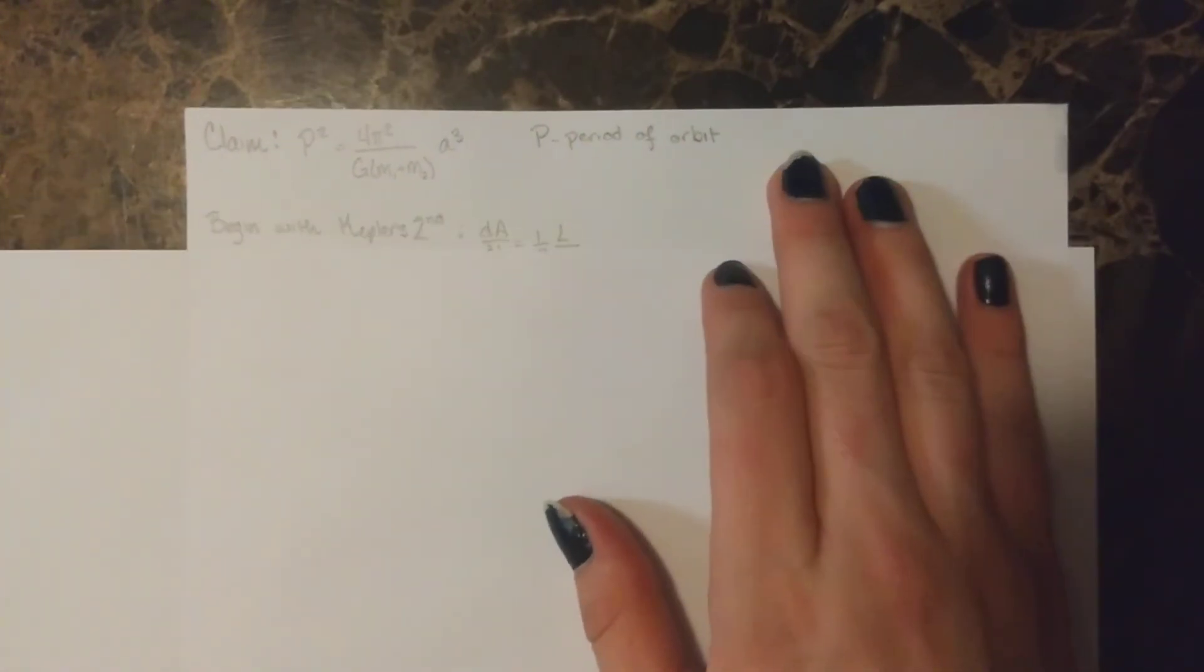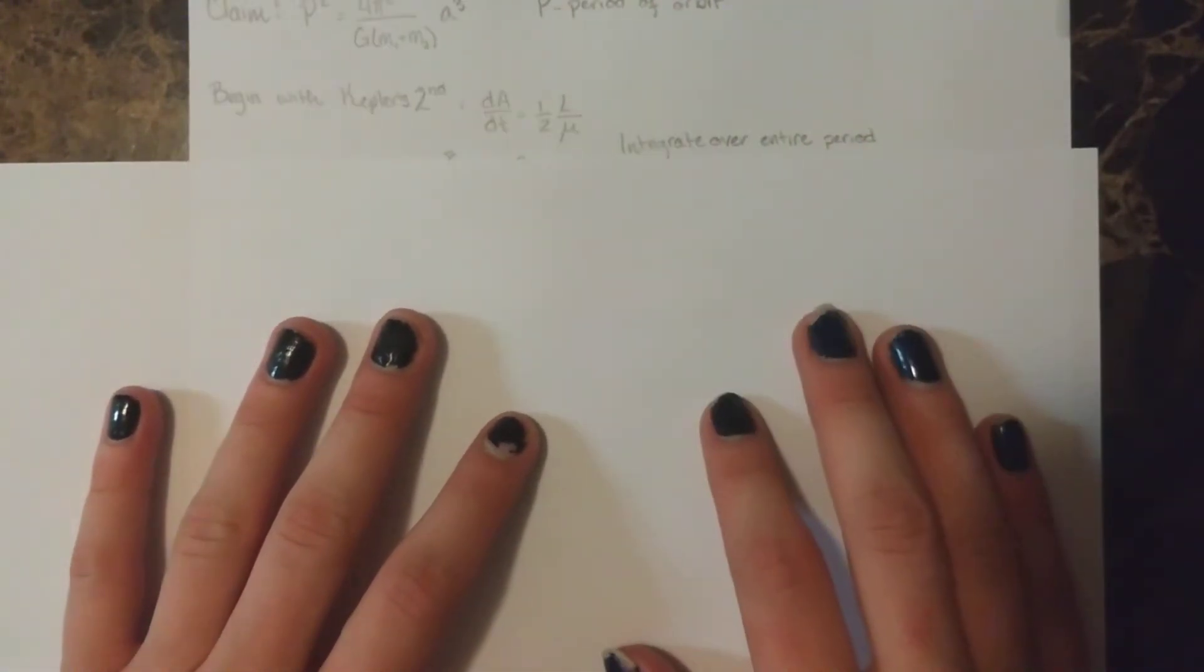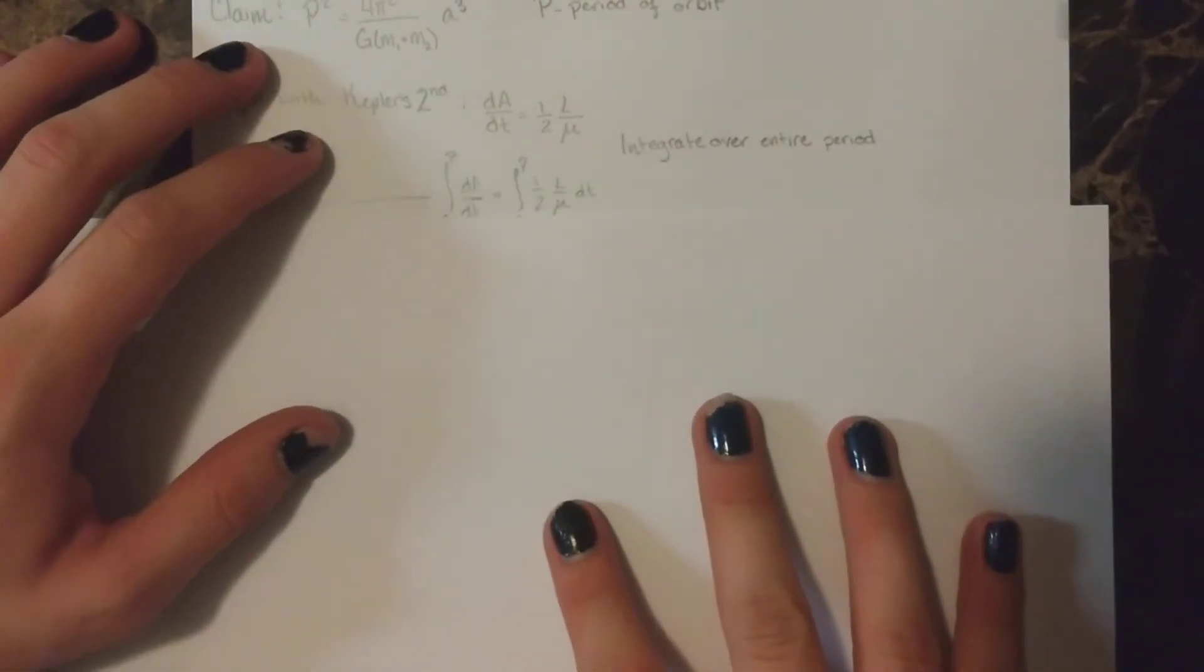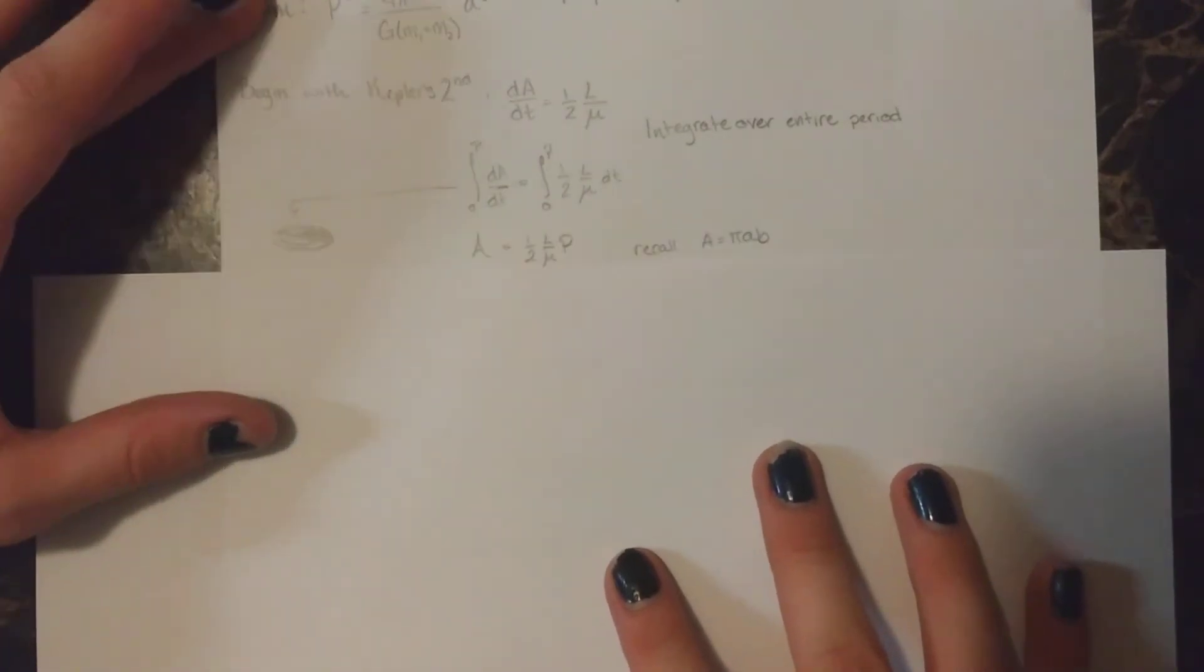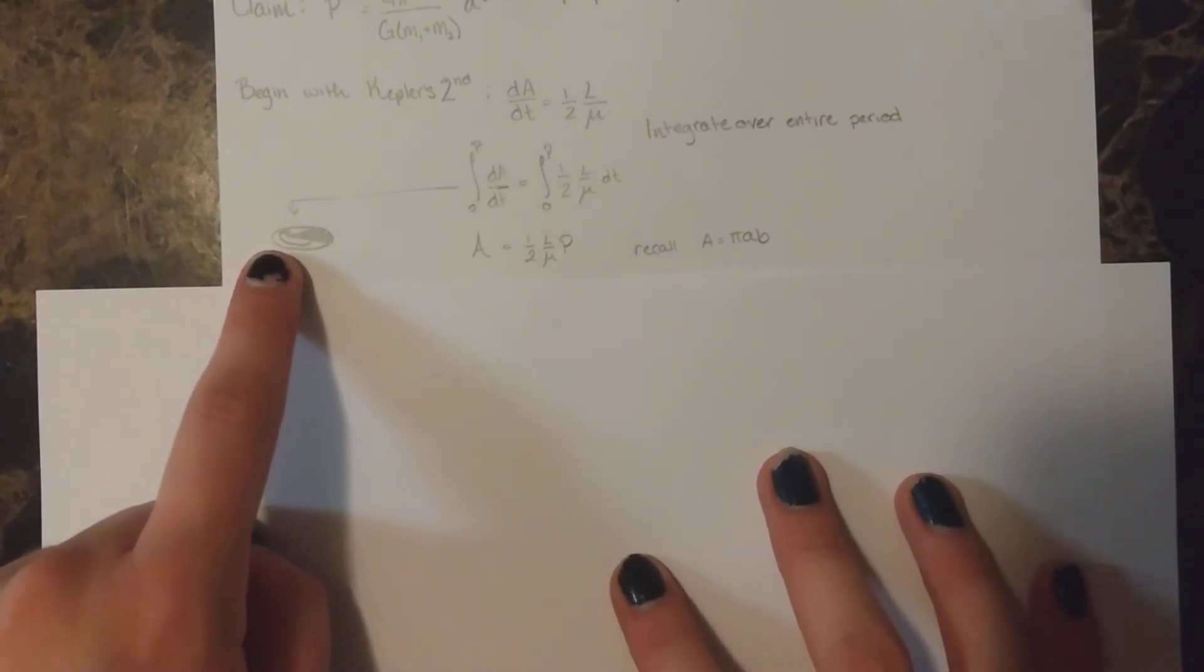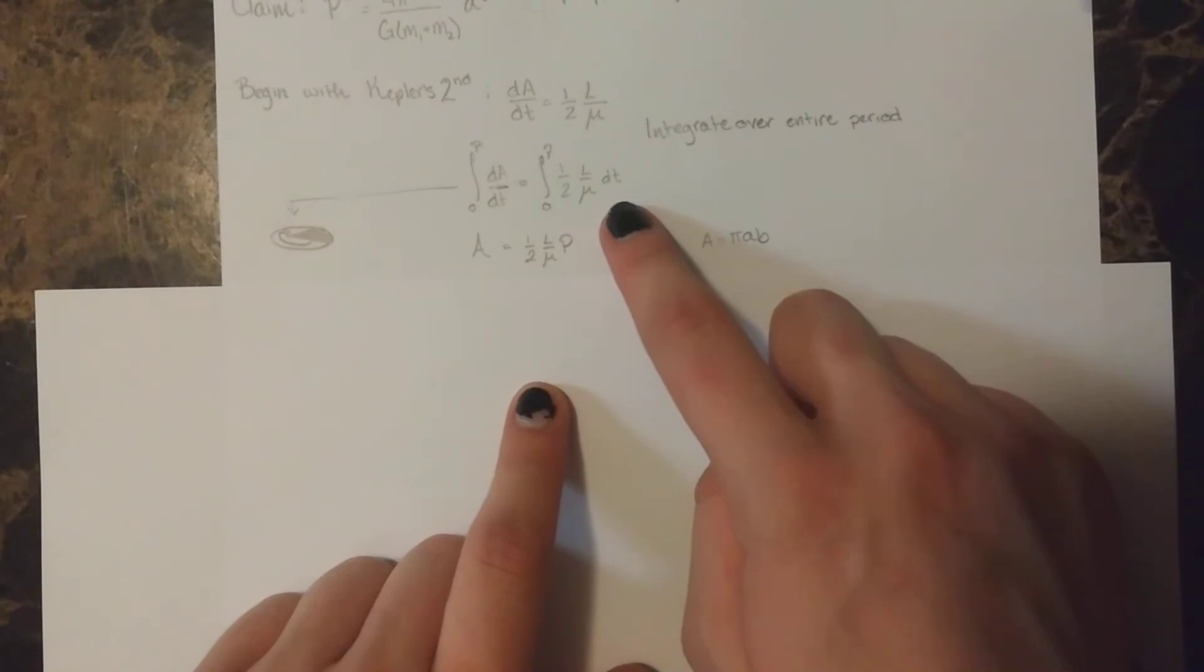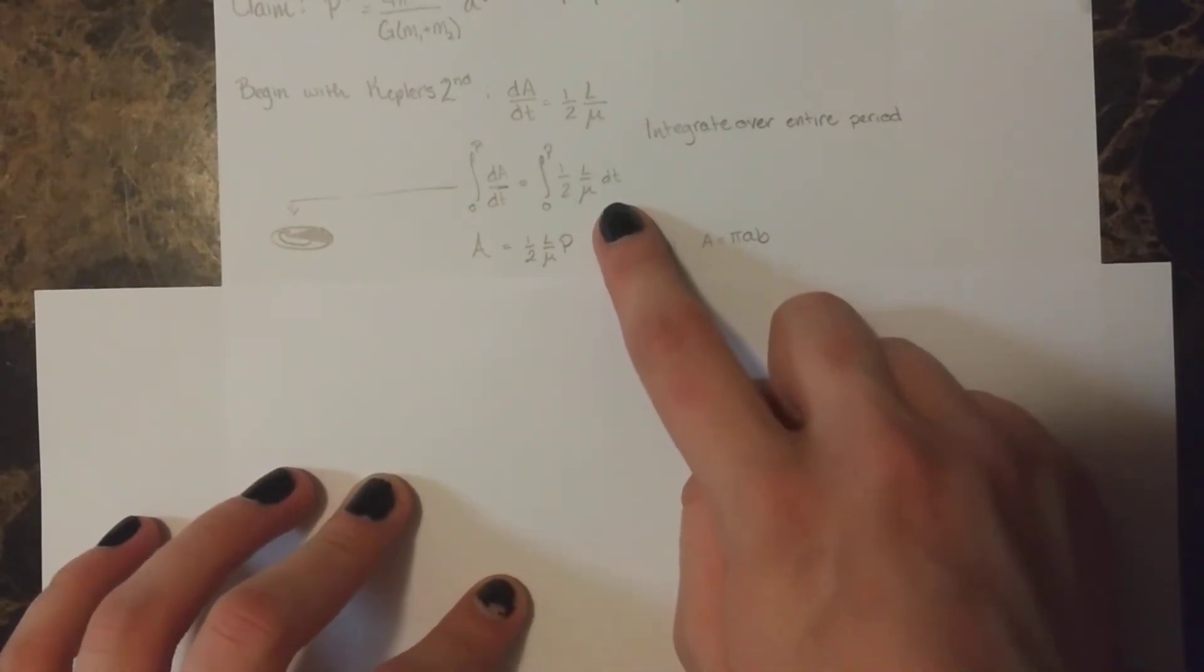And we'll begin here with Kepler's second law. And we'll integrate over the entire period. And so if we integrate over the entire period, we see this area becomes the entire area of the ellipse. And this side on the right has no time dependence, and so we end up with just the period.